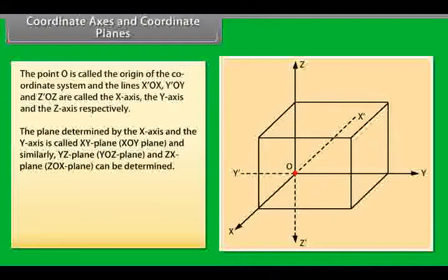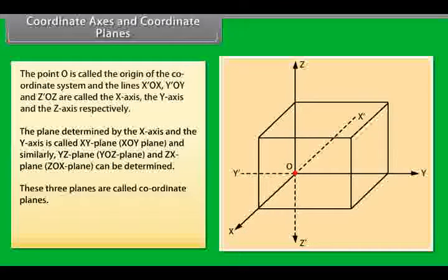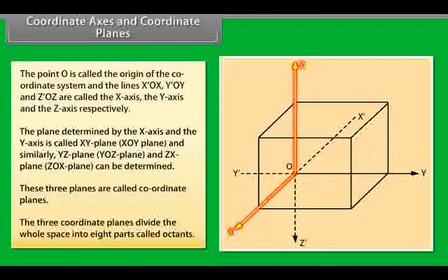The plane determined by the x-axis and the y-axis is called x-y-plane. That is x-o-y-plane and similarly y-z-plane, that is y-o-z-plane and z-x-plane, that is z-o-x-plane can be determined. These three planes are called coordinate planes. The three coordinate planes divide the whole space into eight parts called octants.